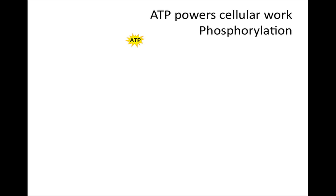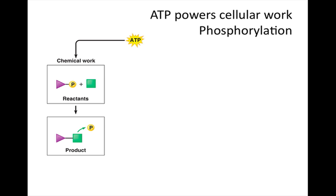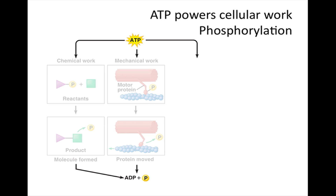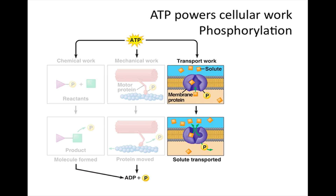ATP has the ability to perform three types of work. In chemical work, the phosphorylation of reactants provides energy to drive the synthesis of products — ATP becomes ADP and a free phosphate group. In mechanical work, the transfer of phosphate groups to motor proteins in muscle cells causes the proteins to change shape and pull on actin filaments, causing cells to contract — also yielding ADP and a free phosphate. In transport work, ATP drives the active transport of solutes across the membrane against their concentration gradient by phosphorylating certain membrane proteins, again yielding ADP and a free phosphate.